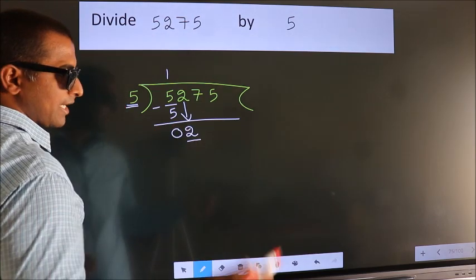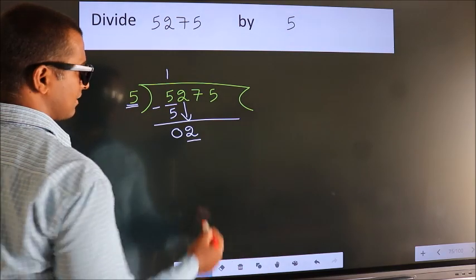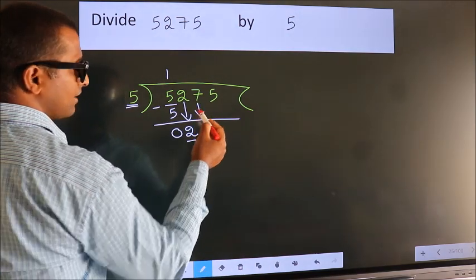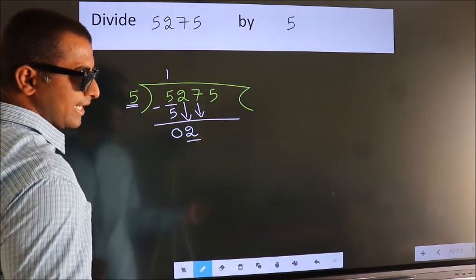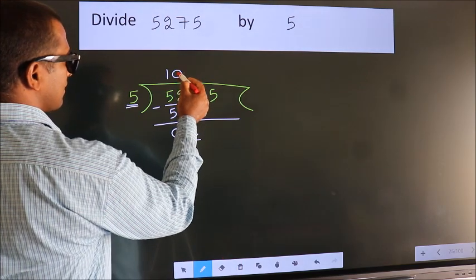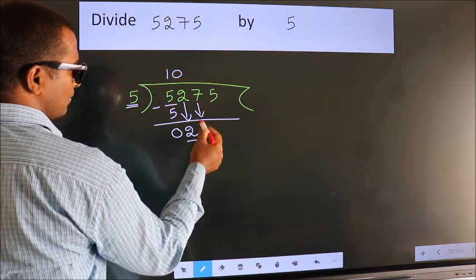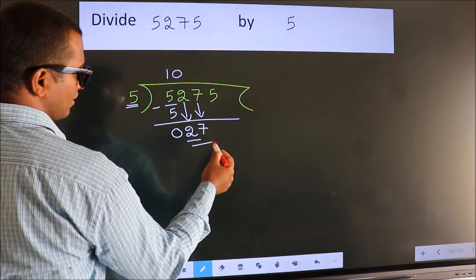So we should bring down the second number. The rule for bringing down the second number is to put 0 here. Then we can bring down this number, so we have 27.